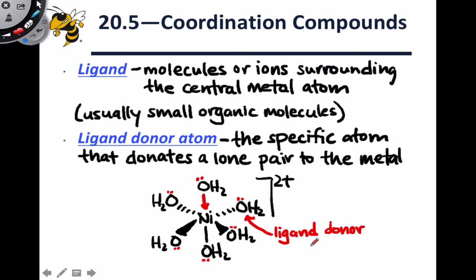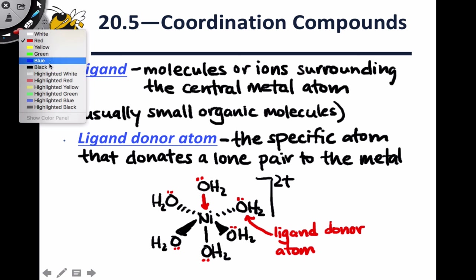Since a coordinate covalent bond involves the donation of two electrons from the same atom, it makes sense in this case that oxygen, the only atom within water that bears lone pairs, serves as the ligand donor atom. It will sometimes be the case that a ligand contains multiple atoms bearing lone pairs, and only one of those atoms actually can serve as a ligand donor atom. Another situation that's worth appreciating is that some ligands include multiple atoms that can serve as donors and that actually do serve as donors.